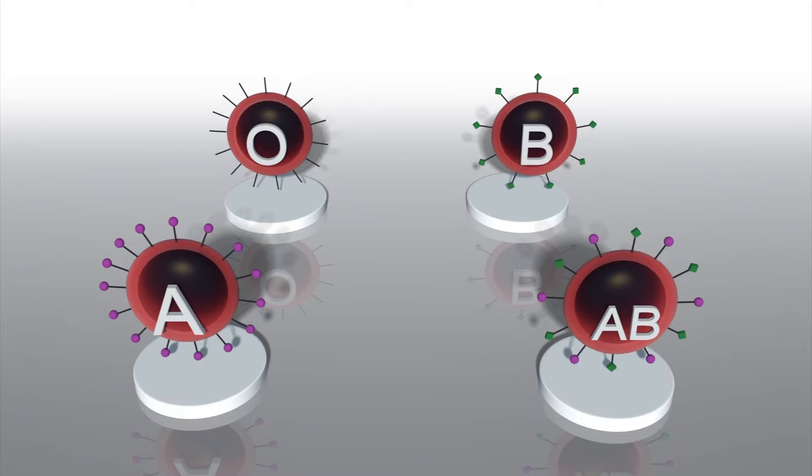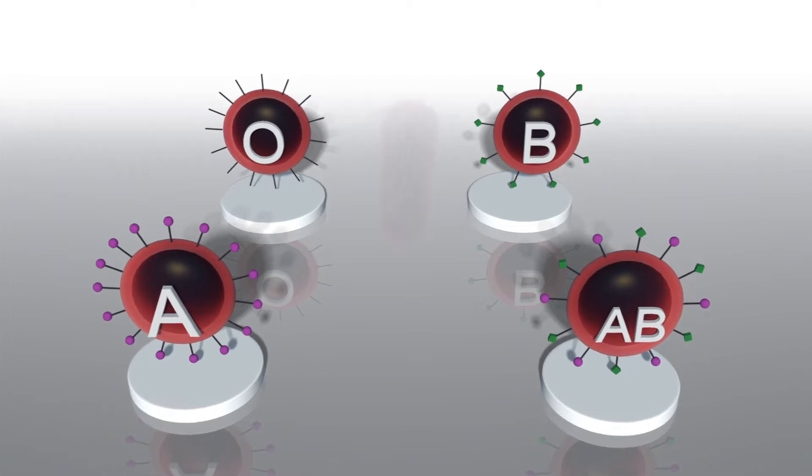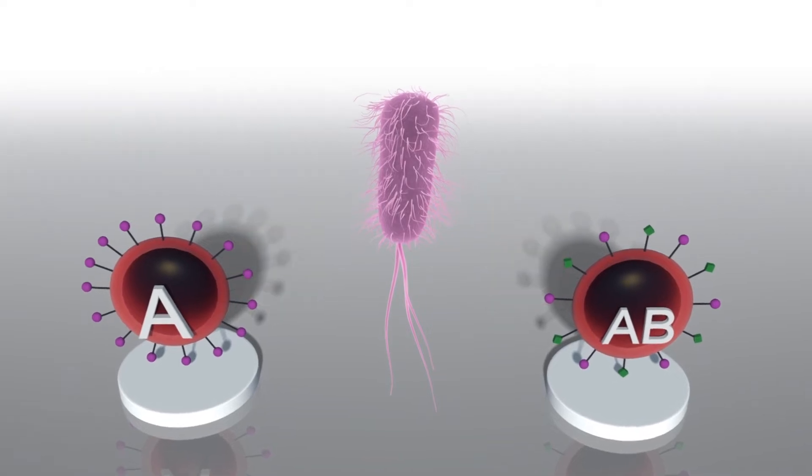Researchers from Washington University School of Medicine and Johns Hopkins University found that the diarrhea-causing strain of E. coli secretes a protein which attaches to sugar molecules on type A blood cells but not type B or O cells.